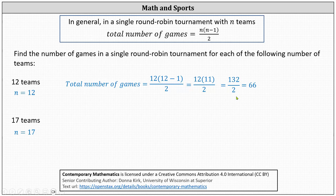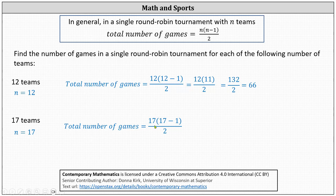Here we begin to see one of the disadvantages of a round robin tournament — 66 games is a lot of games to play in a weekend, for example. If there were 17 teams, the total number of games equals 17 times the difference of 17 and 1, divided by 2, which simplifies to 17 times 16 divided by 2, resulting in 136 games. I hope you found this helpful.